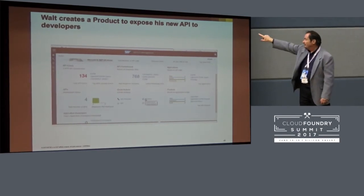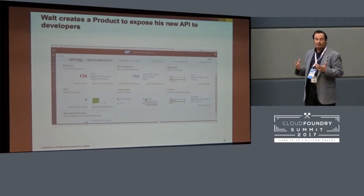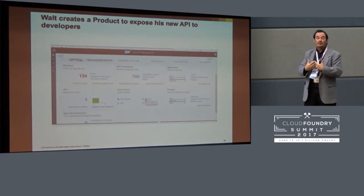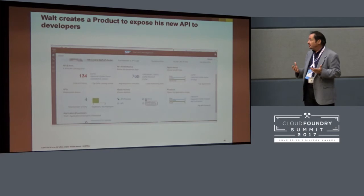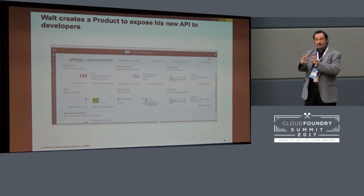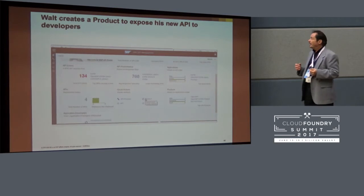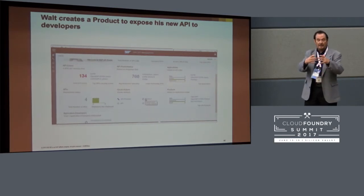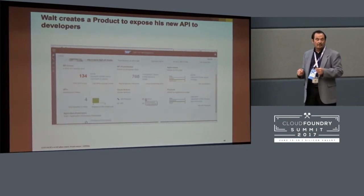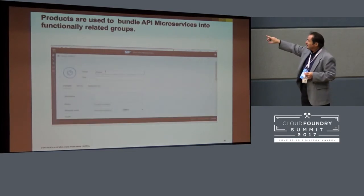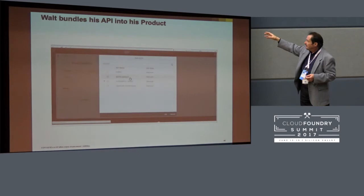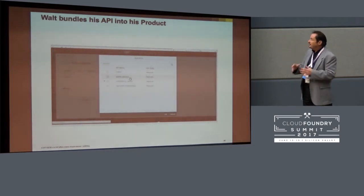He creates a product. A product is a logical collection of APIs that go together for developers — might be as little as one API but typically there may be several. For example, a security product might have several kinds of protection for different kinds of code injection. He's creating a product and selecting just the API that he just built as what's in the product.